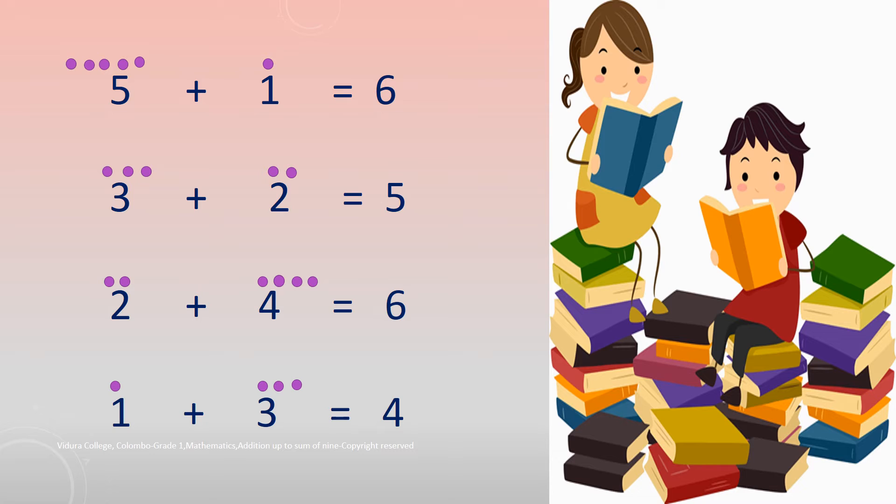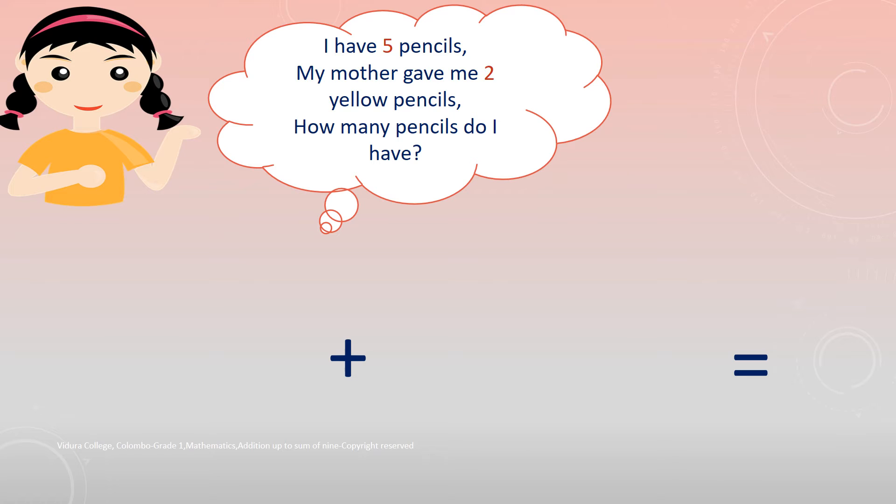Okay, let's make sums. 5 plus 1 is equal to 6. 3 plus 2 is equal to 5. 2 plus 4 is equal to 6. 1 plus 3 is equal to 4. Okay children, now we can move on to our next lesson.